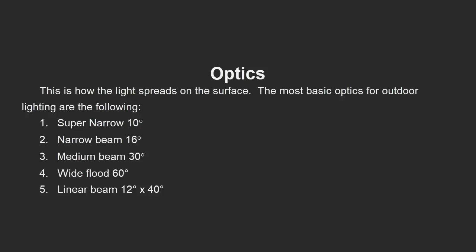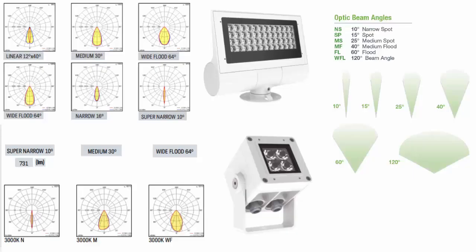Take note that some manufacturers use the same label of narrow beam or wide beam, but the degree of these beams are different from what I've mentioned. So they might say narrow beam, but the degree of the optic is 12 degrees only. Make sure to check these values as well.